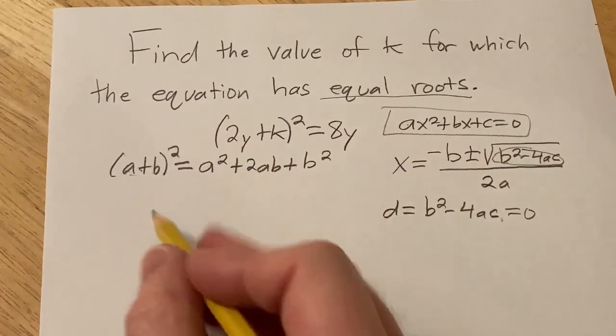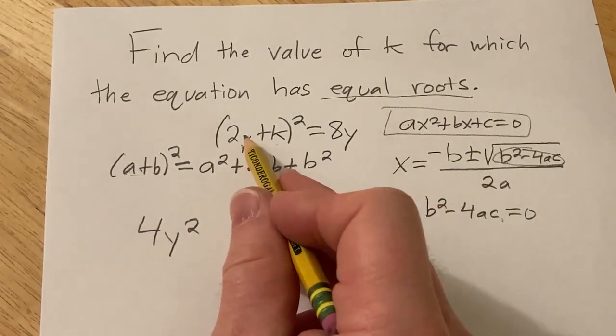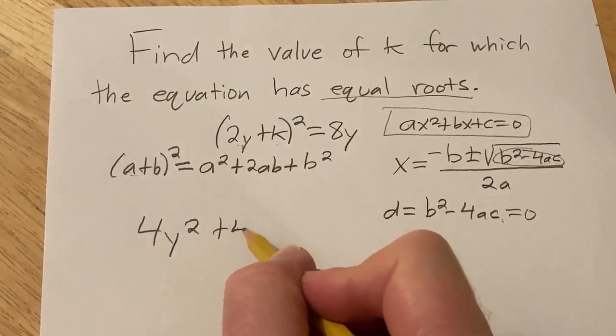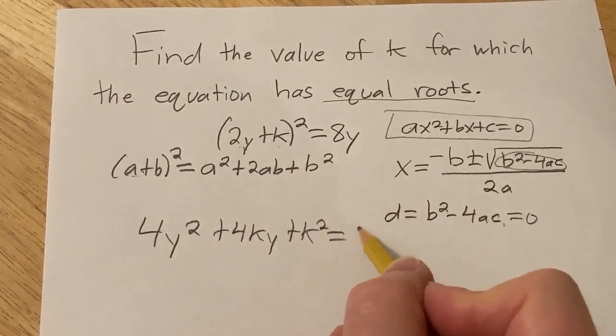So here we square the first piece, it's going to give us 4y². Multiply these and double them, so 2yk gives us 4ky. Square the last piece. And this is equal to 8y.